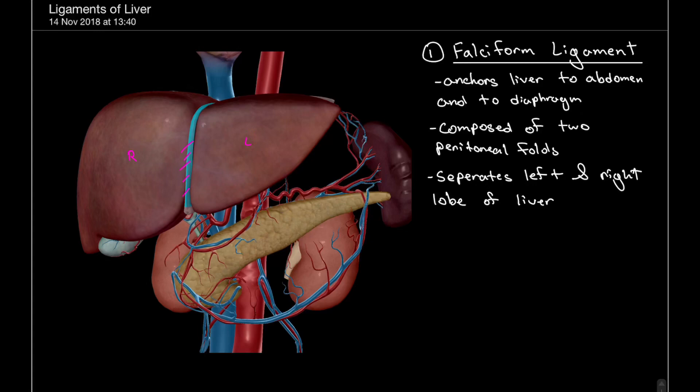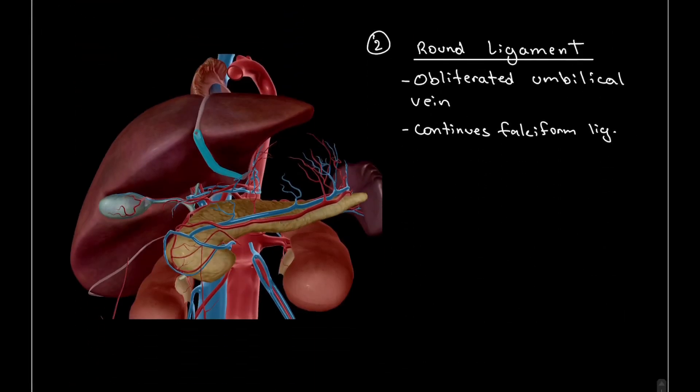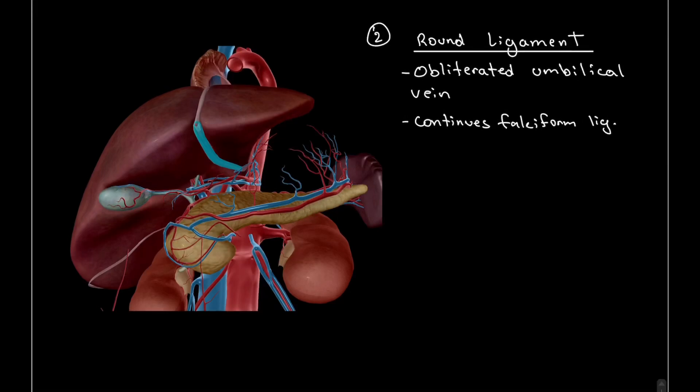As I'm drawing here, it also has fibers going upwards to the diaphragm. Next, below that, we can see an inferior view of the liver that exposes the round ligament.